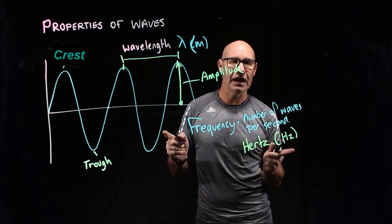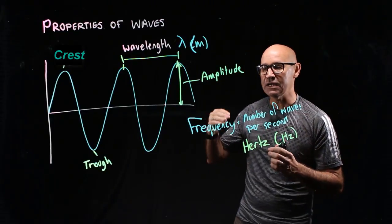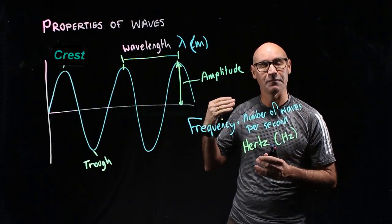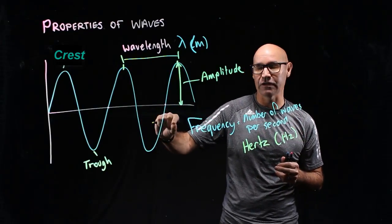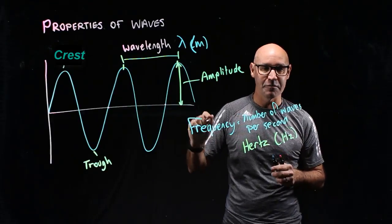Interestingly, young people can hear sounds up to 20,000 hertz. That's 20,000 oscillations, or 20,000 waves per second.